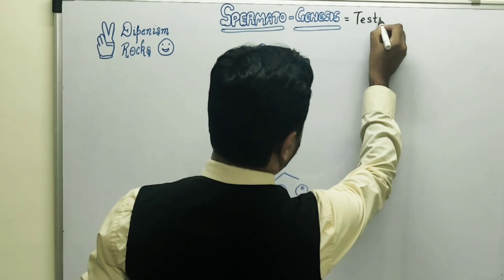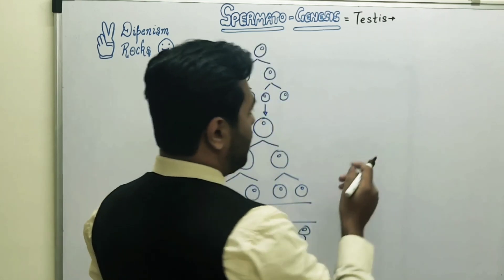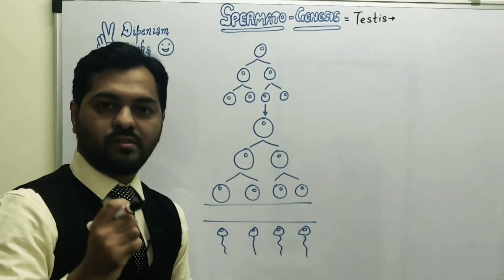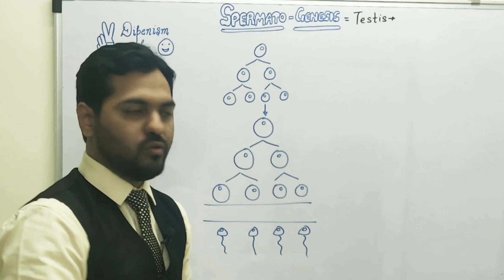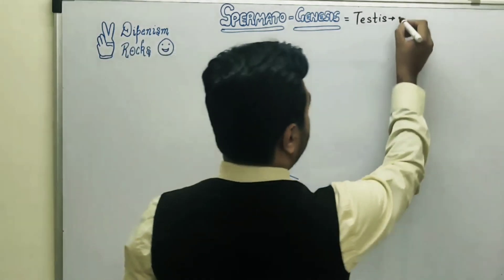Spermatogenesis occurs in the male gonads, that is the testis. The specific structural and functional unit of the testis are the seminiferous tubules. In these seminiferous tubules, spermatogenesis occurs in three stages.